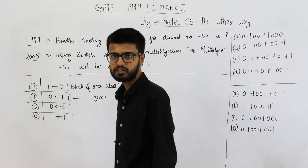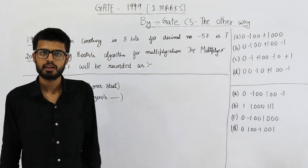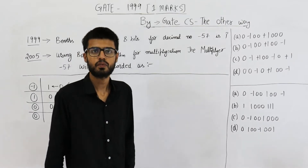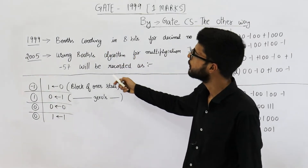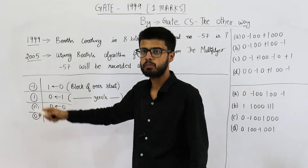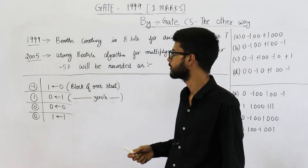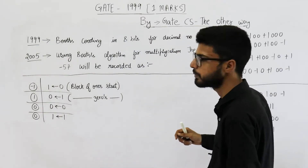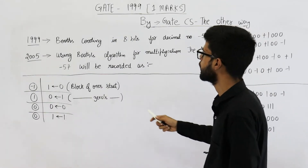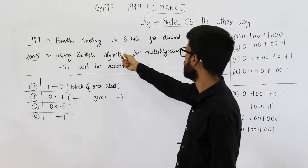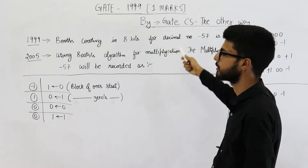Hello students, welcome back. This question is from the GATE 1999 exam. It was asked for one mark and it got repeated as-is in the GATE exam of 2005. This rarely happens in GATE exams that questions get repeated without any change. They're asking: Booth's coding in 8 bits for decimal number minus 57 is?